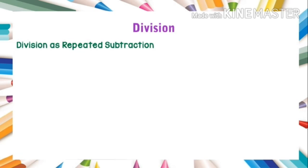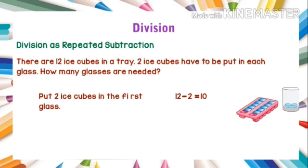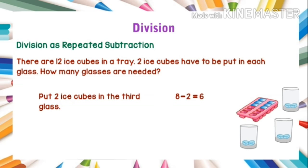Now we will see division as repeated subtraction. Division can also be understood as repeated subtraction. There are 12 ice cubes in a tray and two ice cubes have to be put in each glass. How many glasses are needed? Put two ice cubes in the first glass: 12 minus 2 equals 10. Put two in the second glass: 10 minus 2 equals 8. Put two in the third glass: 8 minus 2 equals 6.